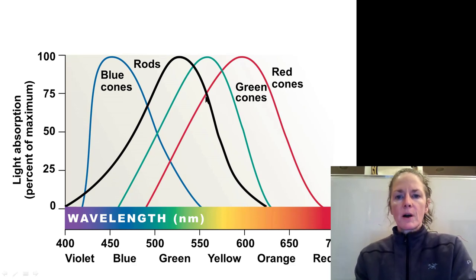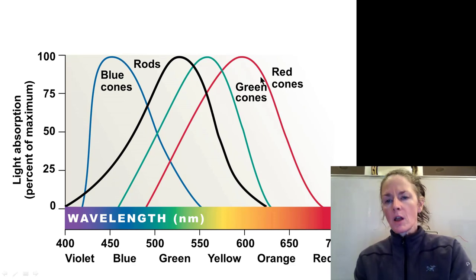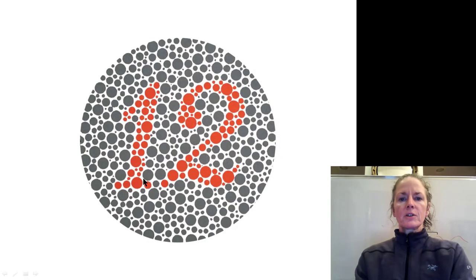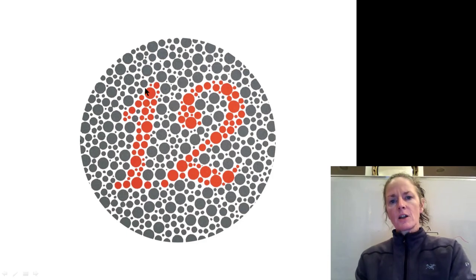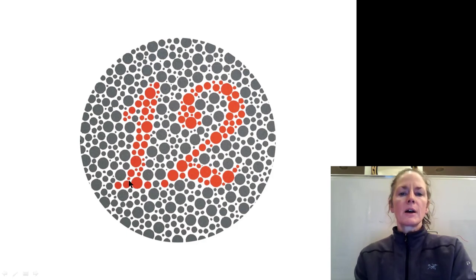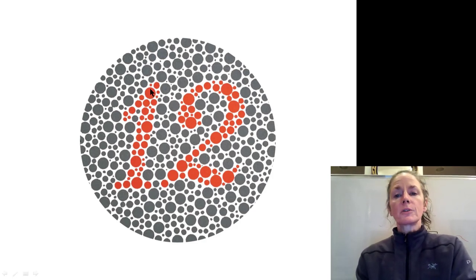Rods are responsive at very, very low levels of light, whereas to activate the cones — which are responsible for color vision — we need more light. Here's an example of a test used to detect color blindness: we have gray blobs in the background and orangish-reddish circles making the number 12. For people who are red-green colorblind, these orange circles look the same as the gray circles, so they cannot tell the difference and cannot see the number.